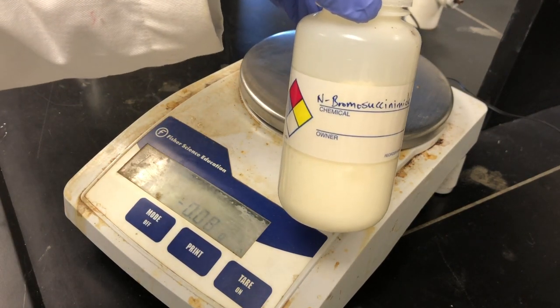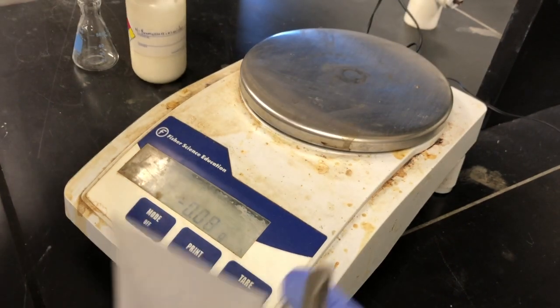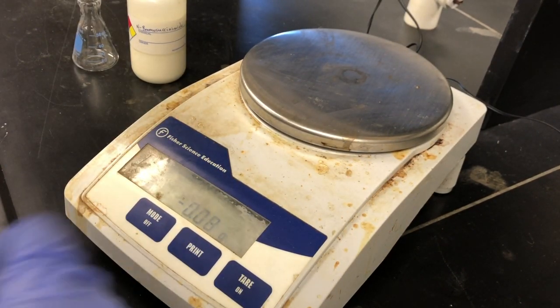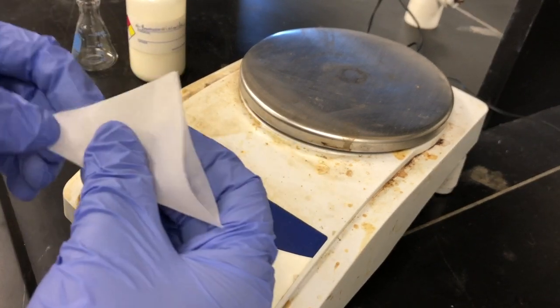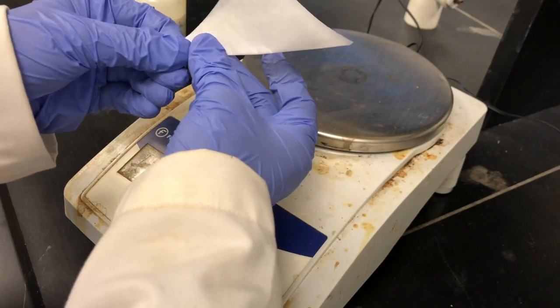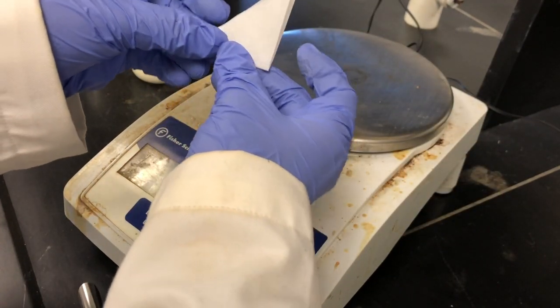We're going to weigh out right around one gram of N-bromosuccinimide. Remember, it's just right around one gram. So whatever we end up recording or measuring out, we'll record the exact mass. We're going to use a weighing paper to make this transfer a little easier later.